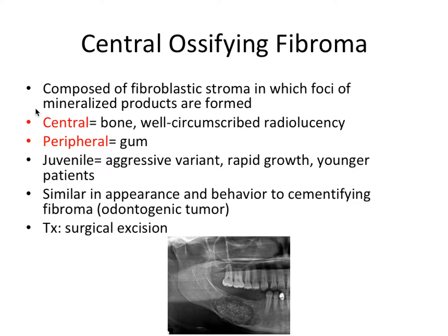If you watched my last video on odontogenic tumors, we talked about central odontogenic fibroma and the peripheral version, and the same theme is here. Central refers to the lesion occurring in bone — it's going to be a well-circumscribed radiolucency with this ossification product in the center. Peripheral means it's occurring in the gum tissue, and you're not going to see that iconic radiolucent appearance. There's also a juvenile version, which is an aggressive variant with rapid growth, affecting a younger patient population.